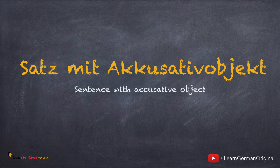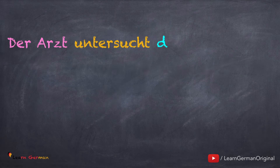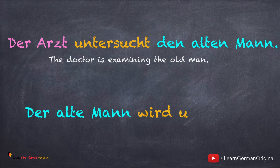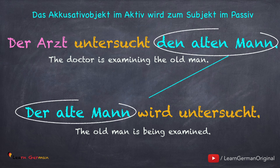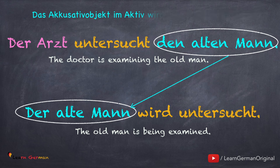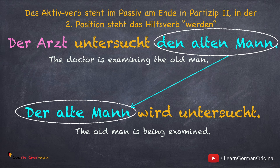Wir haben viele andere Fälle. Wir schauen uns jetzt alle Fälle an. Erstens, wo ein Satz mit nur Akkusativobjekt steht. Zum Beispiel: Der Arzt untersucht den alten Mann. Im Passiv fällt das Subjekt der Arzt weg — also: der alte Mann wird untersucht. Das Akkusativobjekt den alten Mann ist jetzt das Subjekt der alte Mann. Das Verb steht im Partizip 2 am Ende und als Hilfsverb steht wird in Position 2.